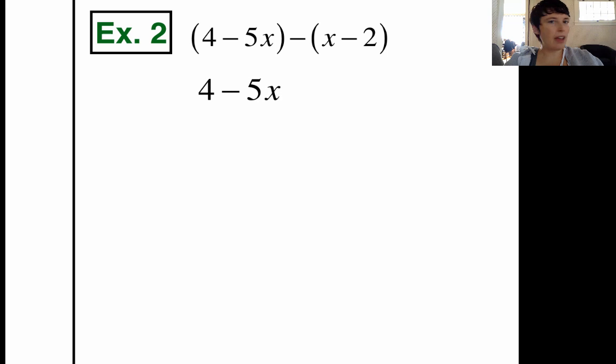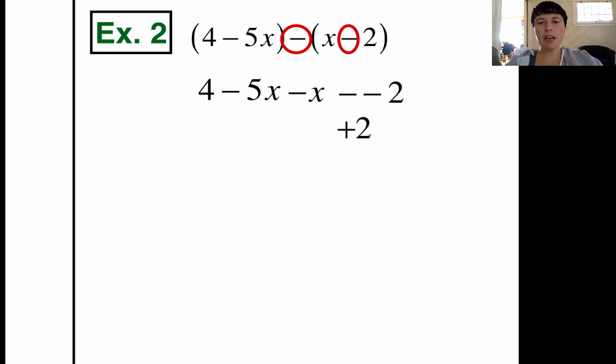Well, I'm going to write 4 minus 5x because I don't need the first parentheses. And then I'm going to pay attention to the takeaway symbol. So I'm going to have to take away the x, but then here's where it gets tricky. Two negative signs. I'm going to take away the negative 2, minus the negative 2. And those two negative signs, remember what two negative signs do? They turn into a positive. So this is really like a plus 2.